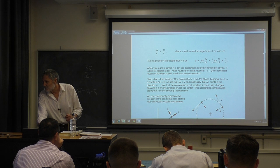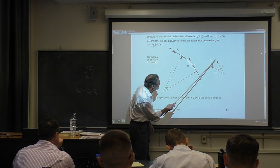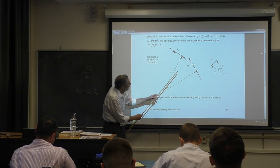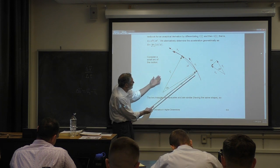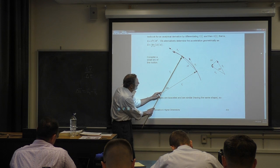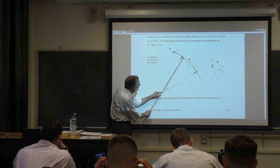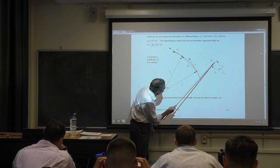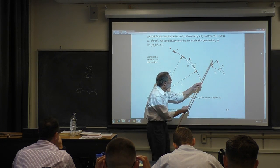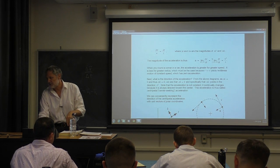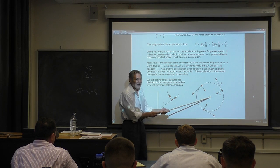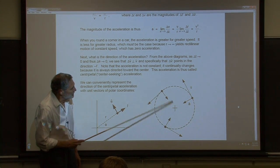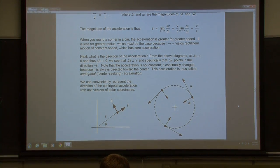We need to find the direction. Look at the direction here. Imagine shrinking delta t down — as the time interval gets smaller and smaller, r2 gets closer and closer to r1, delta theta goes to zero, and you can see that delta v becomes perpendicular to v1, pointing inward. So the answer for the direction is that the acceleration points directly to the center of the circle. At this moment in uniform circular motion, the acceleration always points to the center.